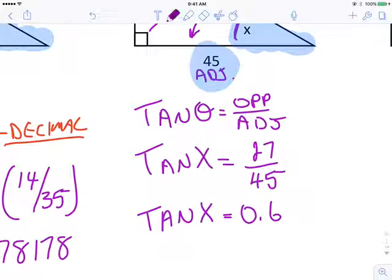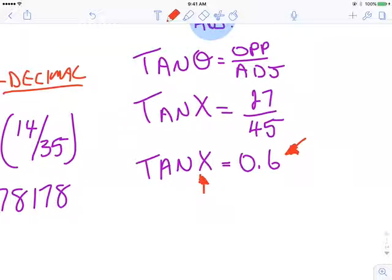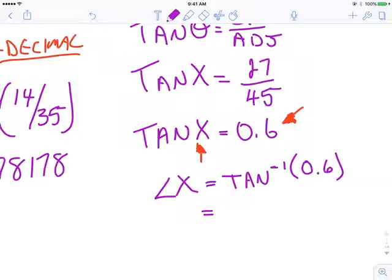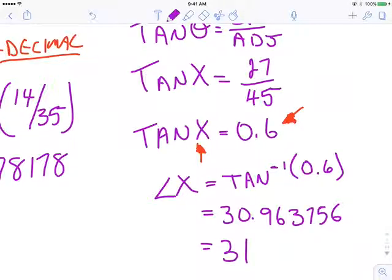Now, here's your hint. I've got this ugly decimal number. I know I'm looking for an angle. So I think to myself, well, if I'm looking for an angle, angle X is equal to, I have to use the inverse function, inverse function of that decimal number. Punch that into your handy dandy calculator and you should get 30.96756 or 31 degrees.